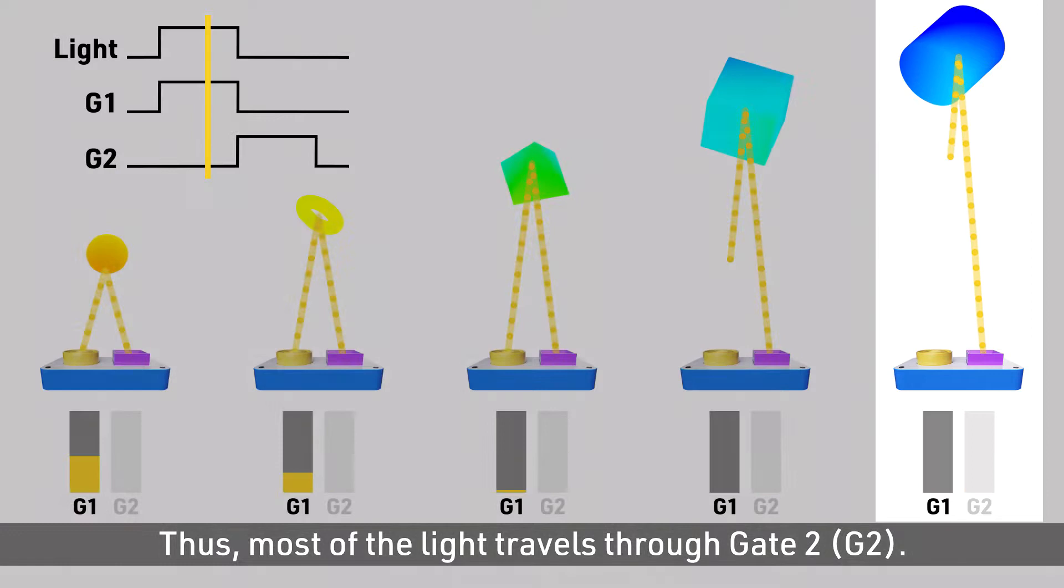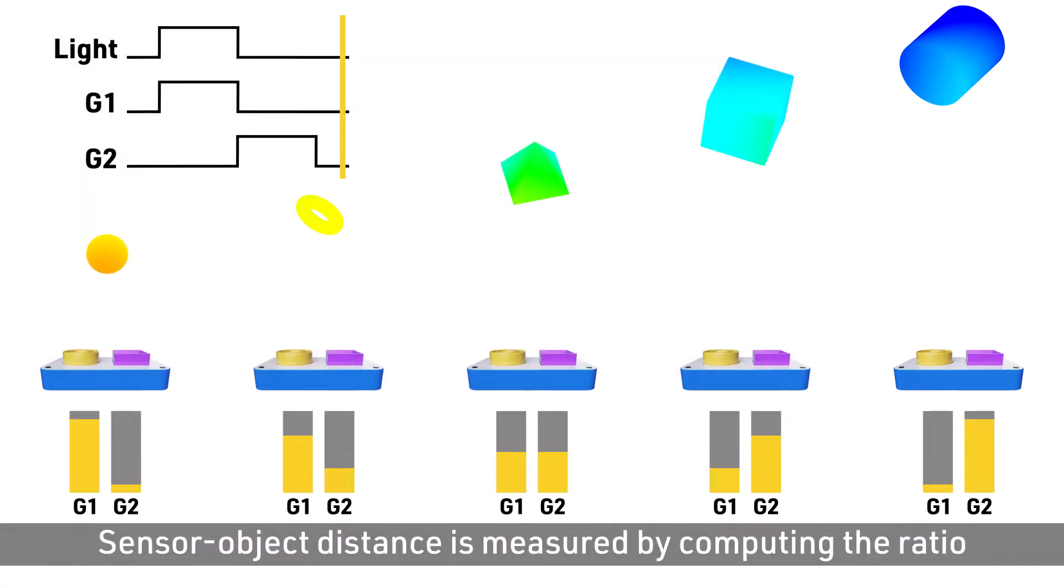Sensor object distance is measured by computing the ratio between the quantity of light entering the two gates.